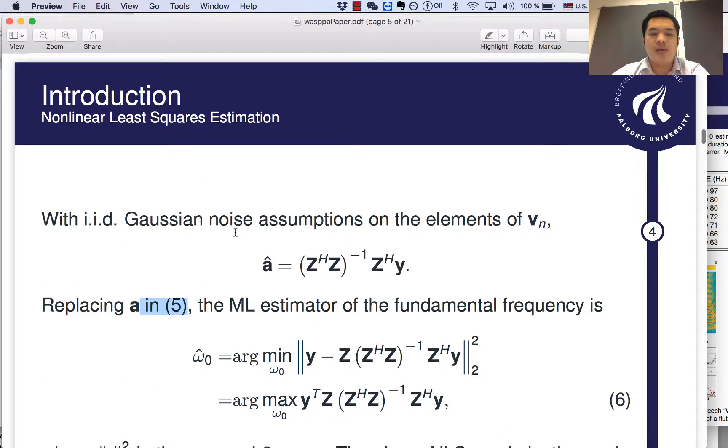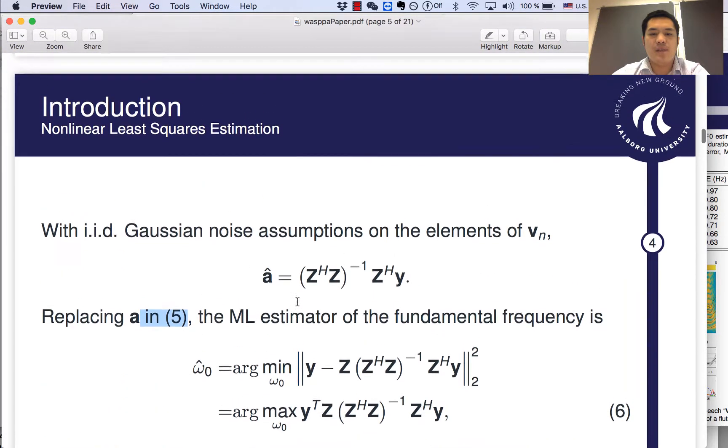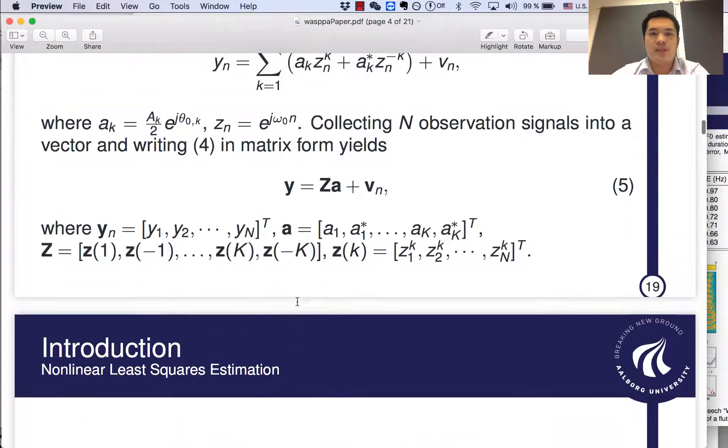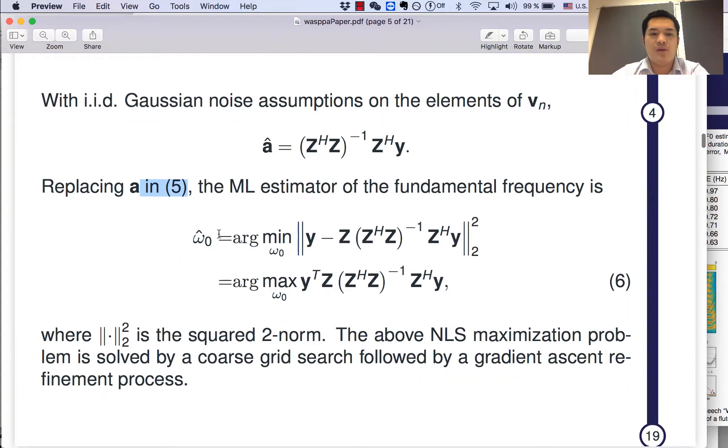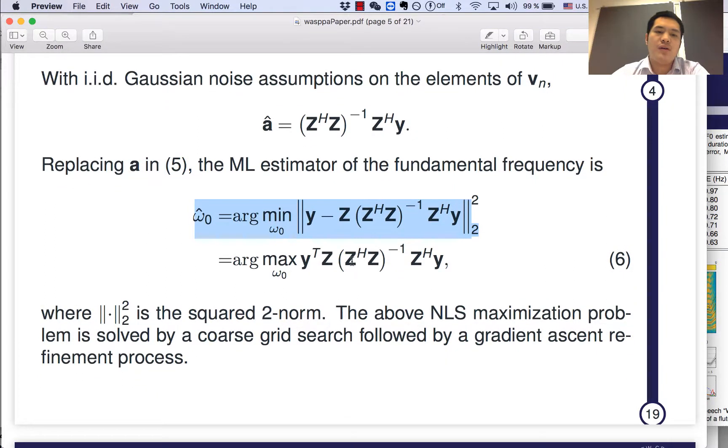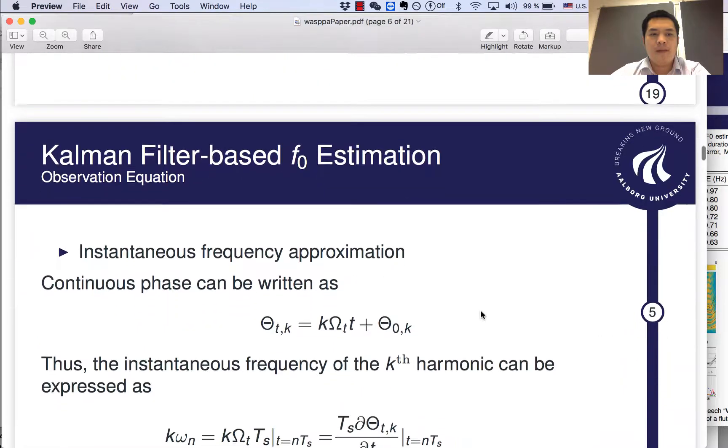And if we replace the amplitudes in five, the maximum likelihood estimator of the fundamental frequency can be written as equation six. As you can see, our cost function is non-linear with respect to the fundamental frequency ω_0. So, we can build a grid and search which pitch on this grid will maximize the cost function.